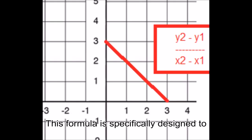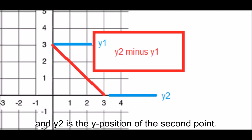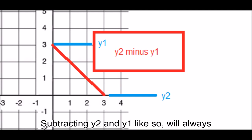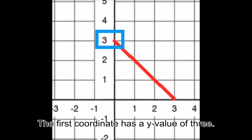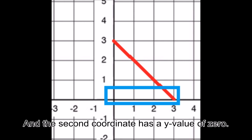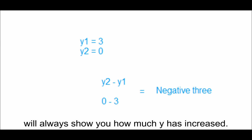This formula is specifically designed to take any increase in x and convert it to 1, so we can find the slope. I will explain how it works. y1 is the y position of the first point. And y2 is the y position of the second point. Subtracting y2 and y1 like so will always show you how much y is increasing. The first coordinate has a y value of 3 and the second coordinate has a y value of 0. Subtracting the first point from the second point will always show you how much y has increased.